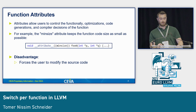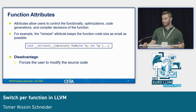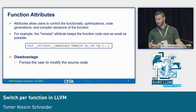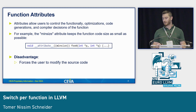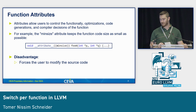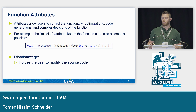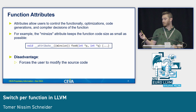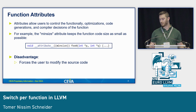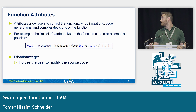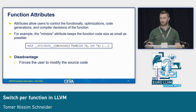There is already an option to do that in LLVM with the approach of function attributes. For example, you can add an attribute to the declaration of a function, like 'min size' here, in order to get a different code generation for that function. But we found a big disadvantage of this approach: it forces the user to modify the source code, and therefore we can't use the same source code for different compilers or different targets.